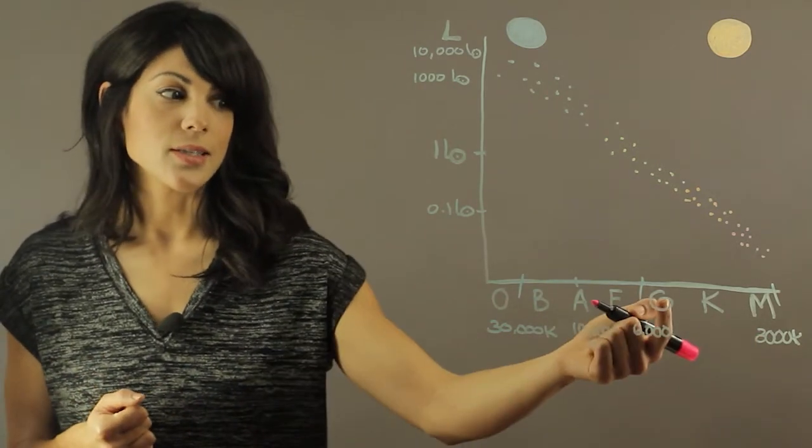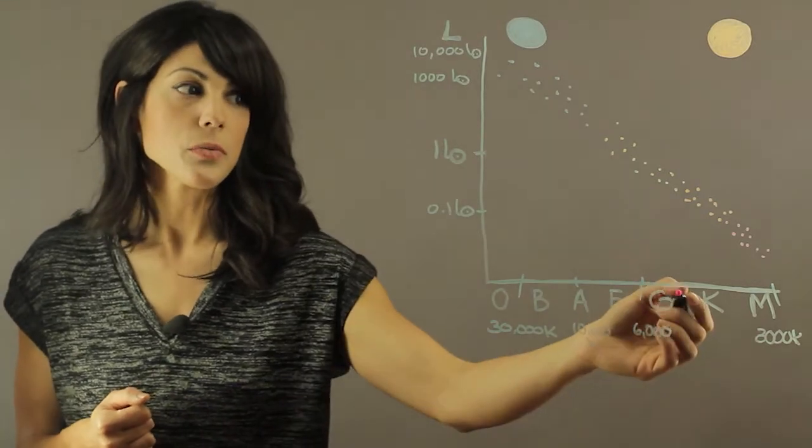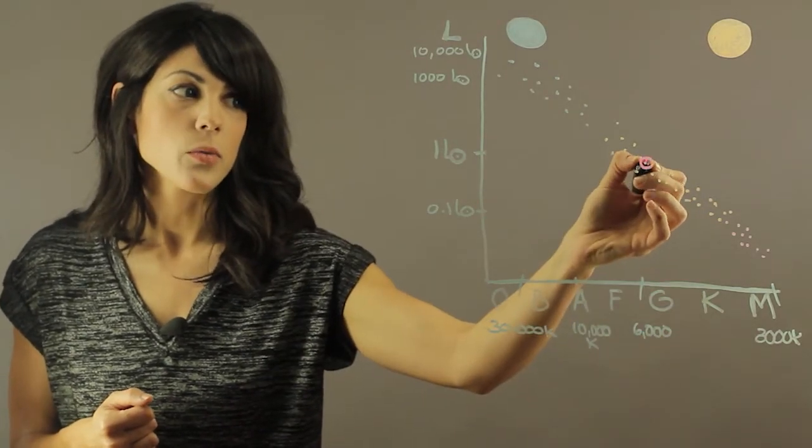Just as a reference, our sun is a G class star, it's a G2, and it's somewhere around here, we're a yellow star.